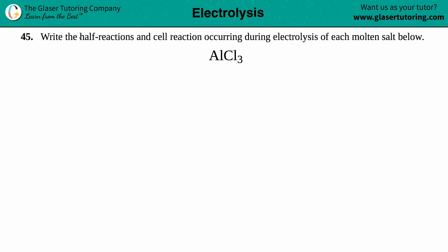Number 45, write the half reactions and the cell reaction occurring during electrolysis of each molten salt below. We have aluminum chloride, which is AlCl3. So we have to write the half reactions and the overall cell reaction for this electrolysis reagent, this molten salt. It's got a metal and a non-metal, so it's an ionic compound or ionic salt.